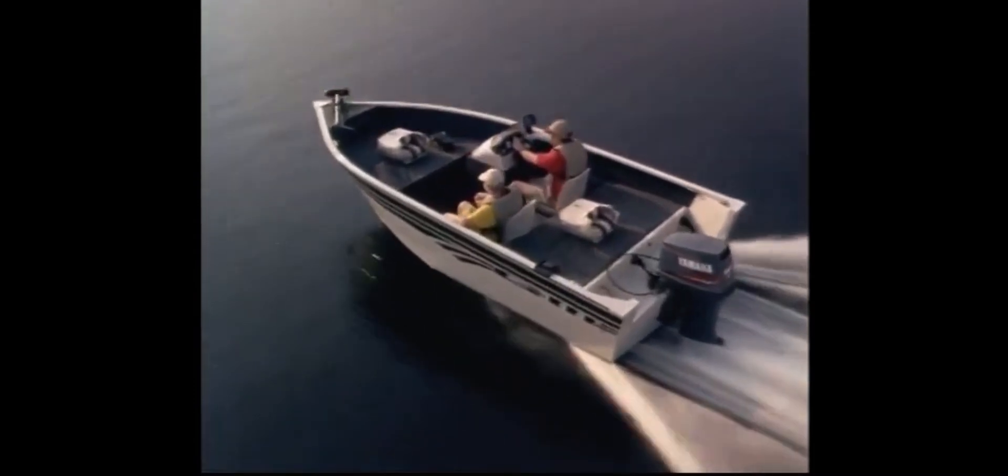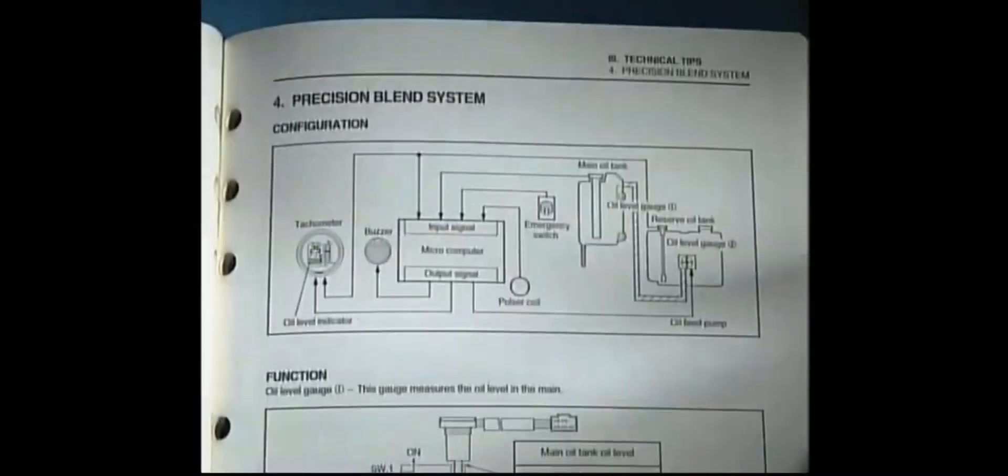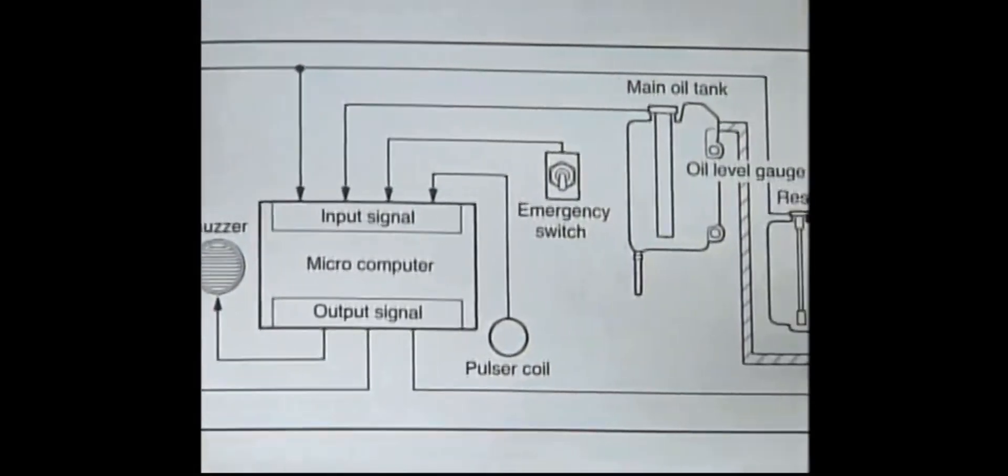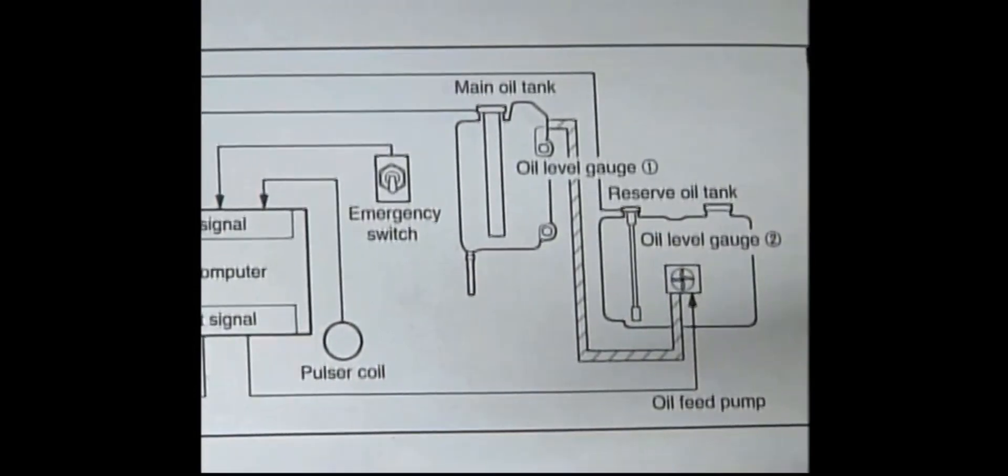Another advantage is economy. An engine, like a high-performance outboard, may need a rich 50 to 1 mixture at full throttle, but just 200 to 1 at idle. The Precision Blend system delivers the right amount of oil needed for each operating condition to ensure economical lubrication.